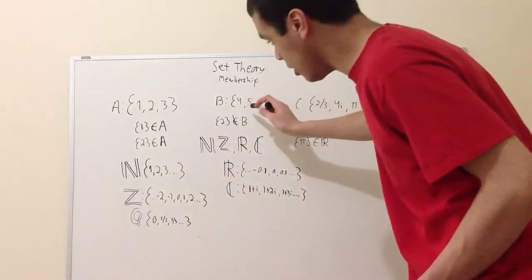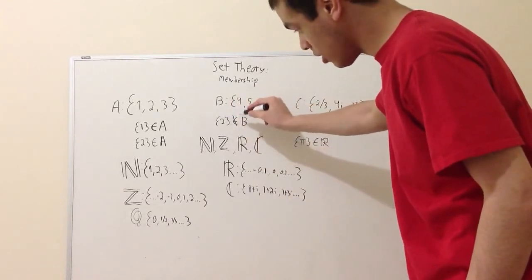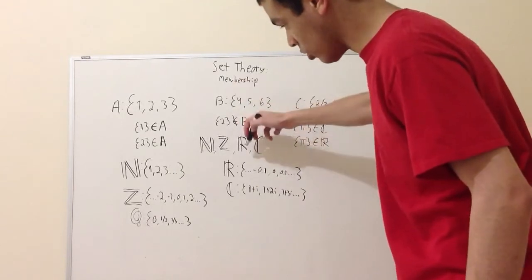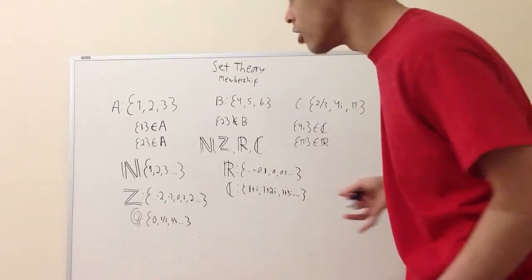Over here we have set B with four, five, and six. I said here that two is not a member of set B. How do you say not? You just have an epsilon, draw a slash through it, and that denotes that element is not a member of a set. Pretty straightforward concept.